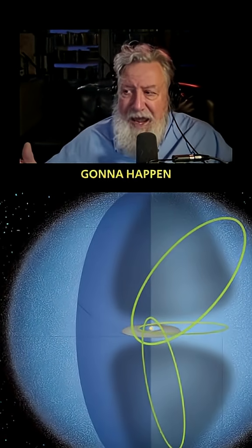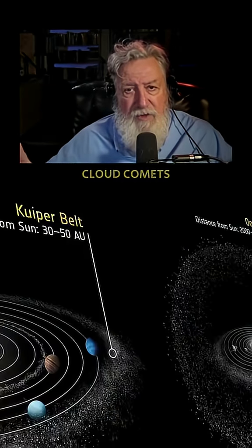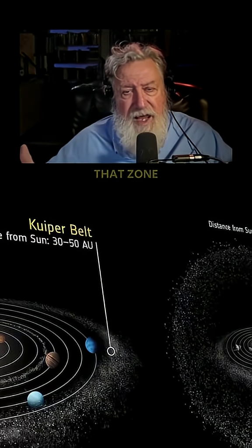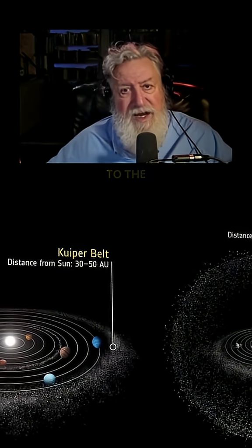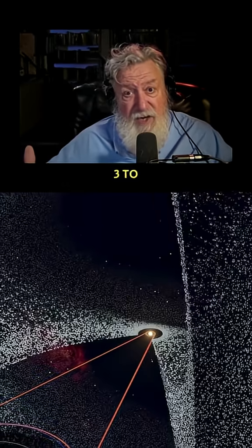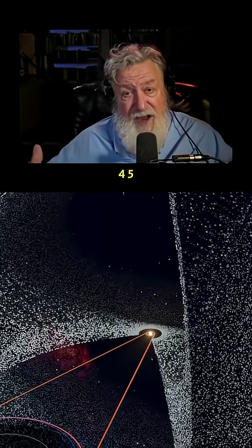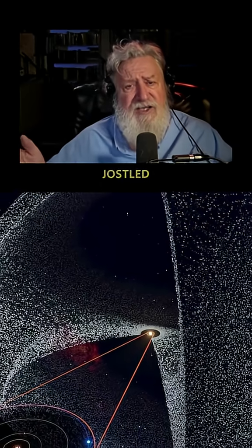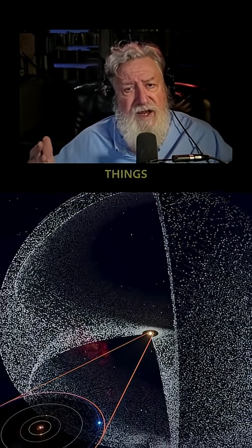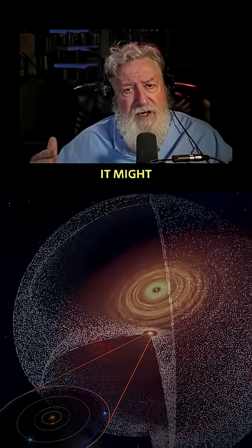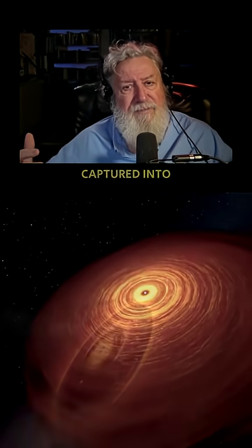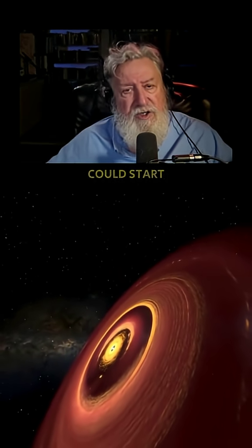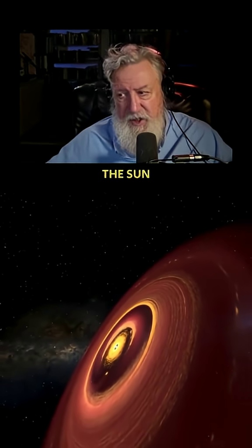Now, what's going to happen out there is those Oort cloud comets — that zone goes almost like halfway to the nearest stars, which is three to four, five light years away. If it gets jostled, it might do one of two things: it might go further away from the sun and get captured into the orbit of another star, or it could start migrating towards the sun.